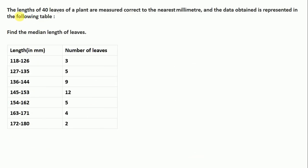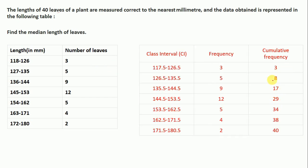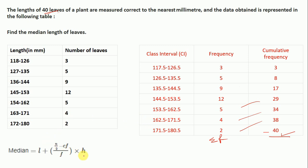Question 2: The length of 40 leaves of a plant are measured correct to the nearest millimeter and the data obtained is represented in a table. Find the median length of the leaves. We are given length in millimeters and the number of leaves. To find the median we first find the cumulative frequency: 3, then 3 plus 5 is 8, 8 plus 9 is 17, 17 plus 12 is 29, 29 plus 5 is 34, 34 plus 8 is 38, and 38 plus 2 is 40 — which equals the total frequency, or summation of f. The formula for median is the same: L plus (N/2 minus CF) divided by F, into H.